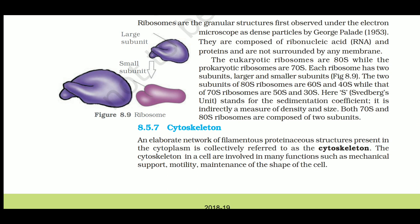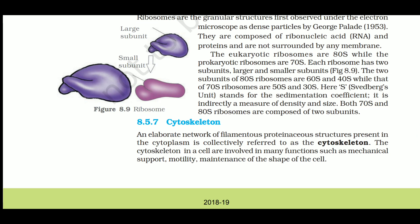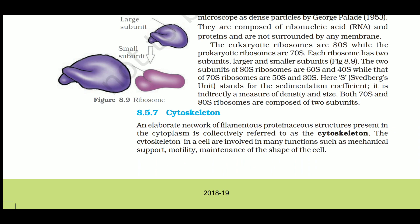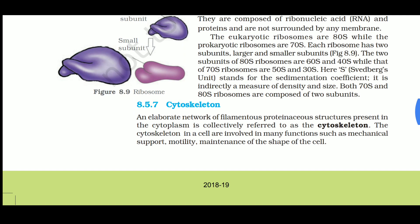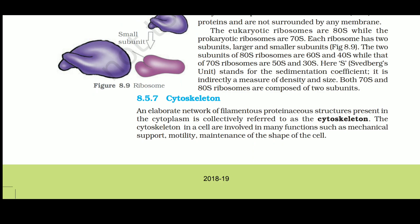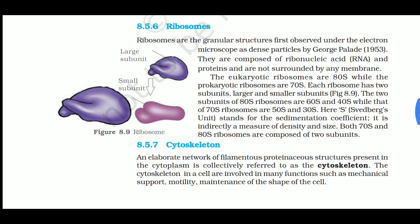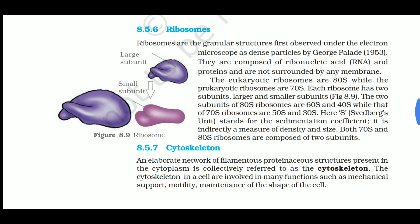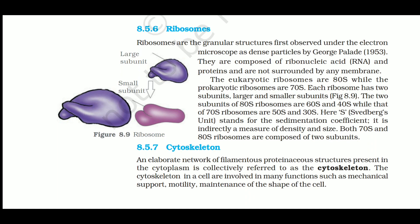The eukaryotic ribosomes are 80S while the prokaryotic ribosomes are 70S. Each ribosome has two subunits - larger and smaller. The two subunits of 80S ribosomes are 60S and 40S, while those of 70S ribosomes are 50S and 30S. 'S' stands for Svedberg unit. Important exam note: ribosomes were first observed by Palade, not by Svedberg. Ribosomes are also called Palade granules.